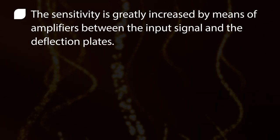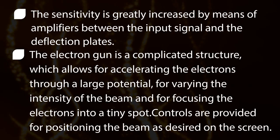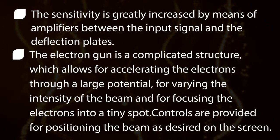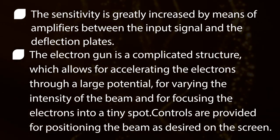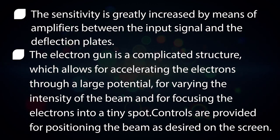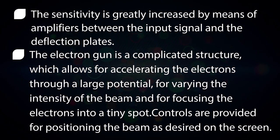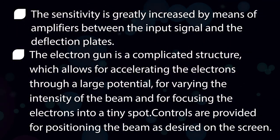The sensitivity is greatly increased by means of amplifiers between the input signal and the deflection plates. The electron gun is a complicated structure which allows for accelerating the electrons through a large potential, for varying the intensity of the beam and for focusing the electrons into a tiny spot. Controls are provided for positioning the beam as desired on the screen. That's all about cathode ray tube.